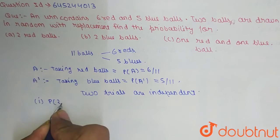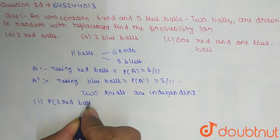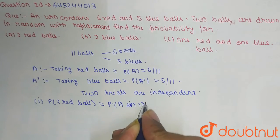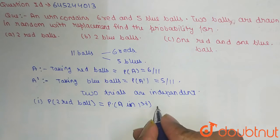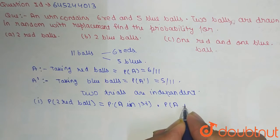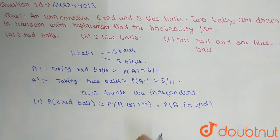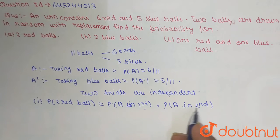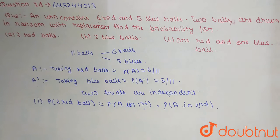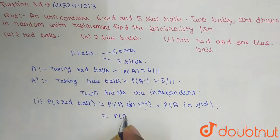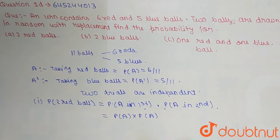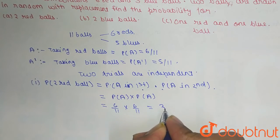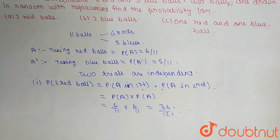For the first part, the probability of two red balls equals P(A) in the first draw multiplied by P(A) in the second draw. Since the trials are independent, this equals P(A) cross P(A), which is 6/11 into 6/11, giving us 36/121. This is the probability for two red balls.